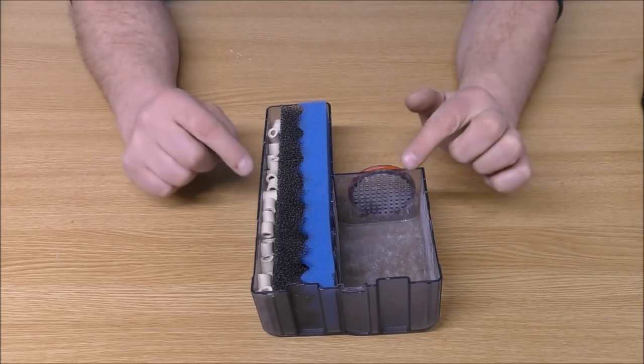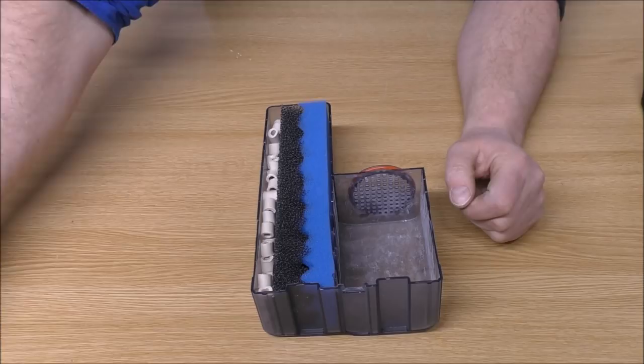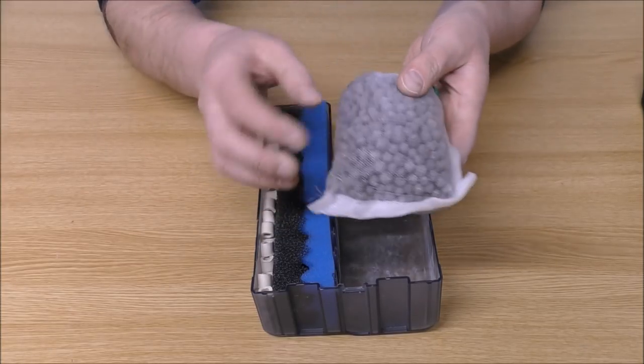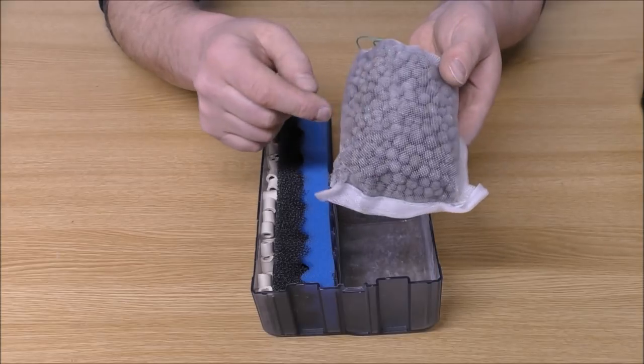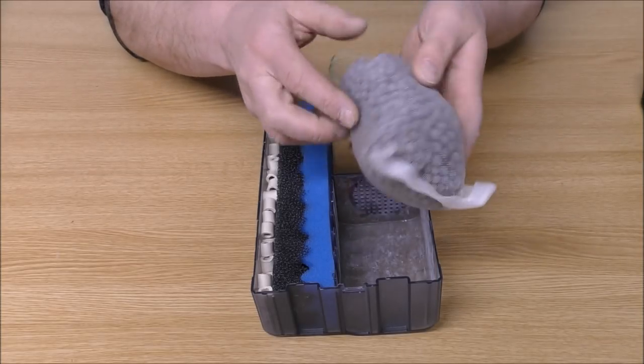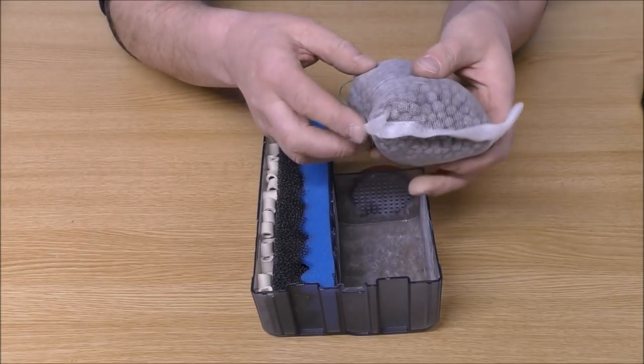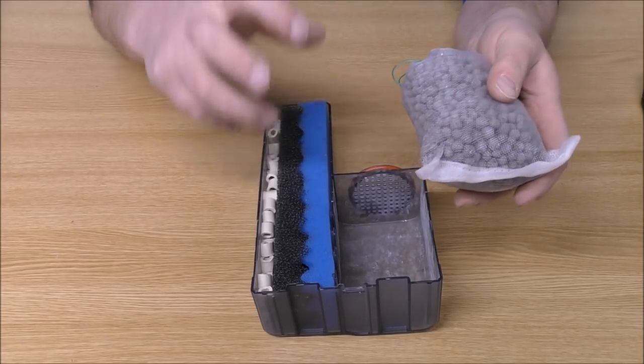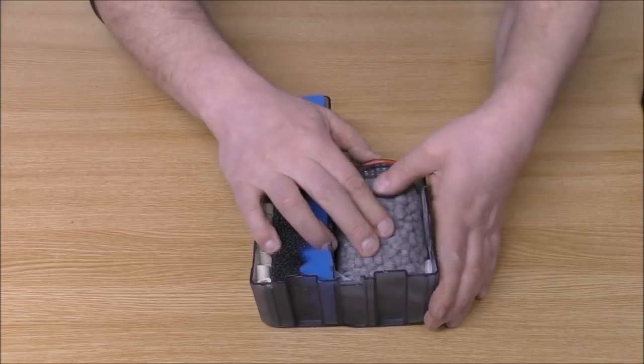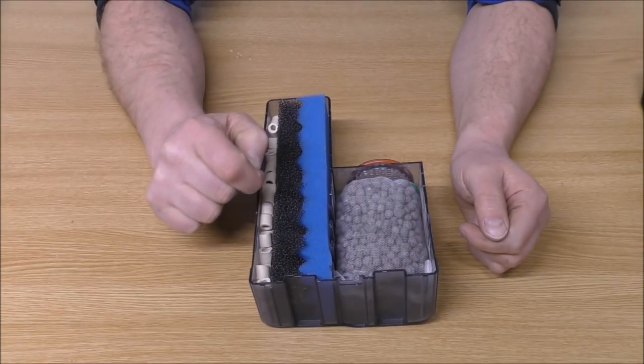Because remember, most internal filters have very little space for good media. So in there, we've got a little mesh bag, and it's pretty much crammed full of bio gravel. This is a porous gravel made from the same material as BioHome. It's a really unique product. It just allows you to max out very small filters. And there's approximately 400 grams in there.